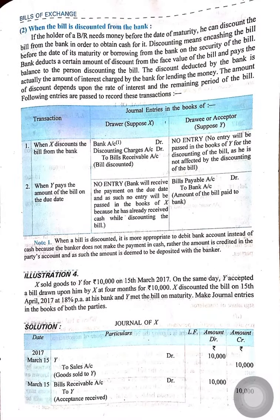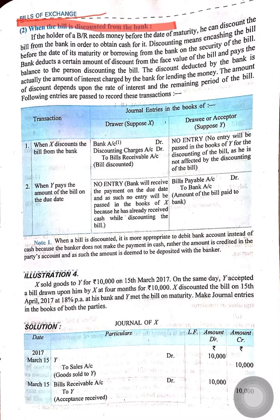As in the previous videos of Bills of Exchange, we have discussed 3 videos till now and this chapter will occupy more than 7 or 8 videos. So this is the fourth part of the chapter Bills of Exchange. In the previous video, we discussed that when the writer of the bill, Mr. X, retains the bill till due date with him. But now we will discuss the second method when the bill is discounted from the bank.